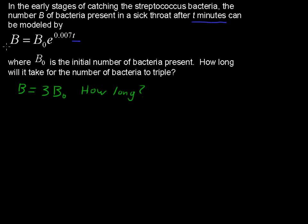When I write out this formula, I'm not going to write B. I'm going to write 3 times B sub 0. So we have 3 times B sub 0 equals B sub 0 times E to the 0.007T. I left a little space there because we're going to take the natural log of each side. If this side equals the other side, we can take the natural log of each side.